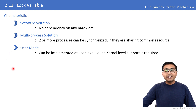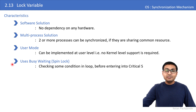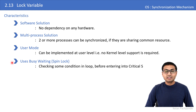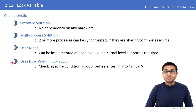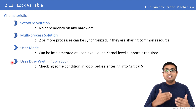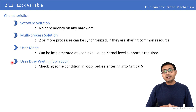The fourth characteristic is busy waiting, also known as spin lock. This mechanism uses the busy waiting concept, which is checking some condition in a loop before the process enters the critical section.